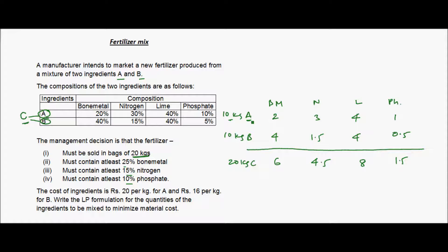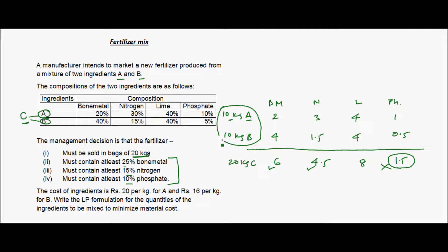Let us check if this composition of 10 kgs A and 10 kgs B meets the management decisions. The 20 kg bag needs at least 25% bone metal: 25% of 20 is 5 kgs, and we have 6 kgs — condition met. Nitrogen must be at least 15% of 20 = 3 kgs, and we have 4.5 kgs — condition met. Phosphate must be at least 10% of 20 = 2 kgs, but we only have 1.5 kgs — condition not met. So the 1:1 ratio of A to B does not satisfy all conditions.